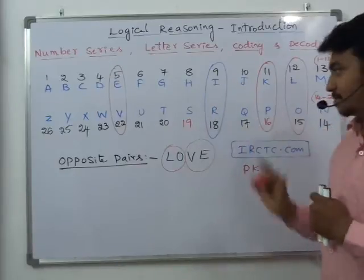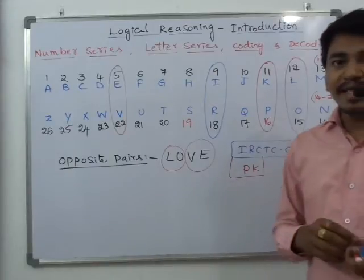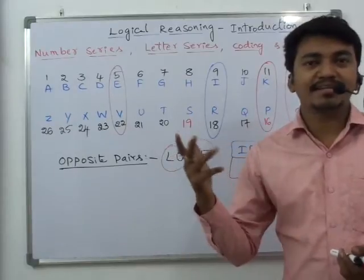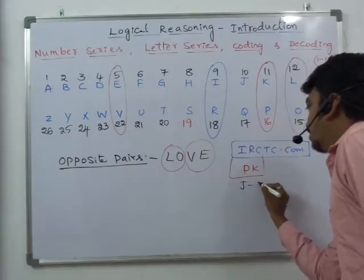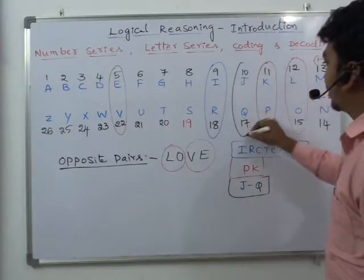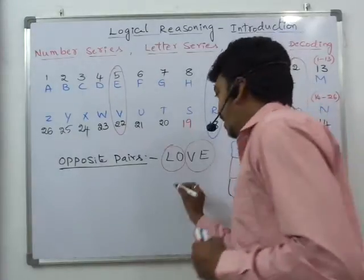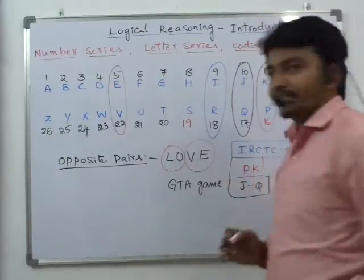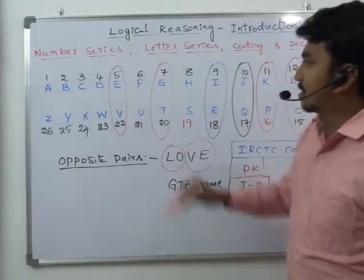You can remember playing cards — in a 52-card deck you have King, Queen, Jack. So J and Q form a pair. You can also remember the GTA game — by using the first two letters G and T, so G and T form a pair.